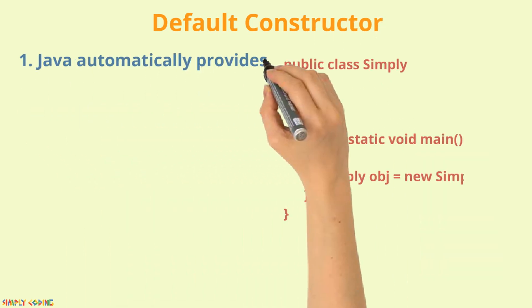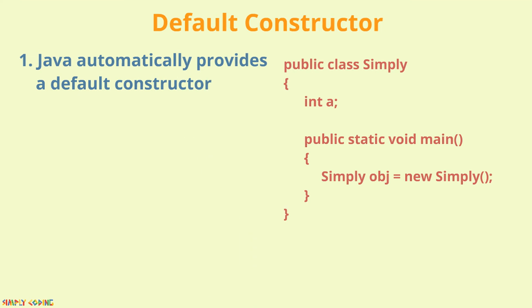First is default constructor. If you do not specify a constructor, Java automatically provides a default constructor that initializes all member variables to zero.